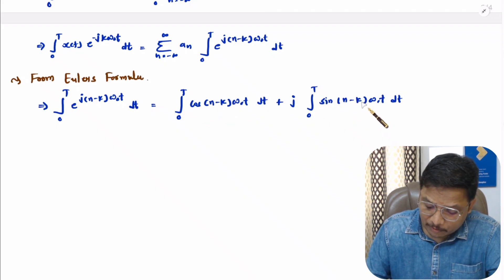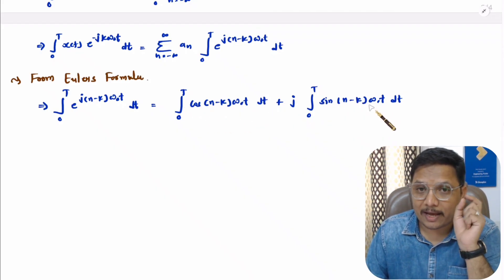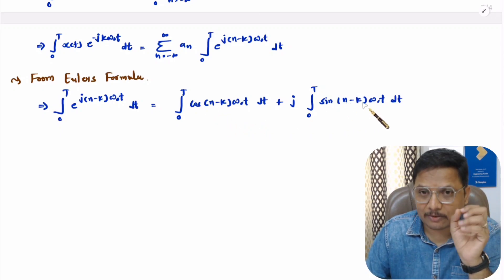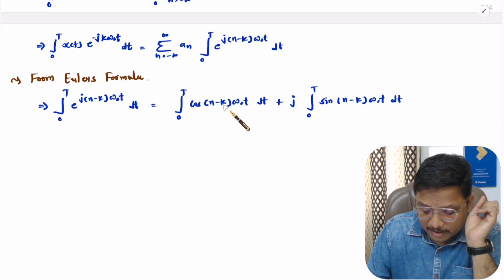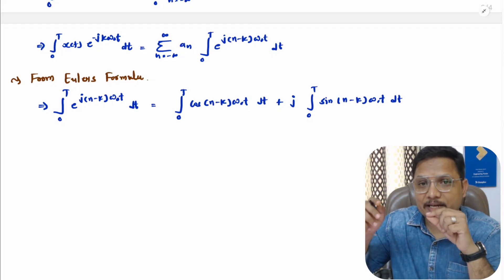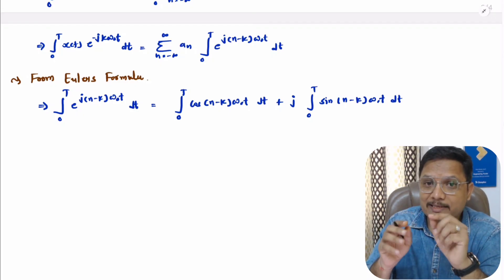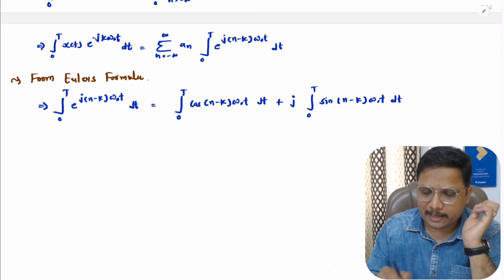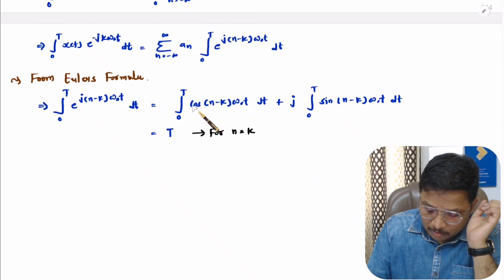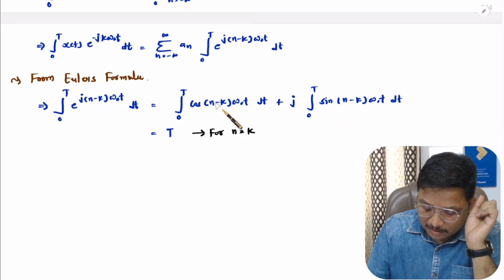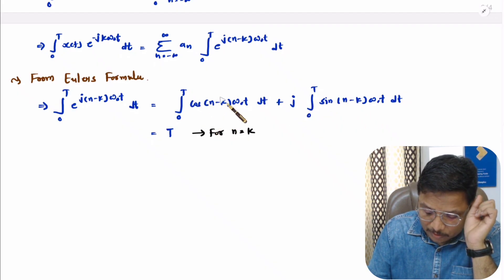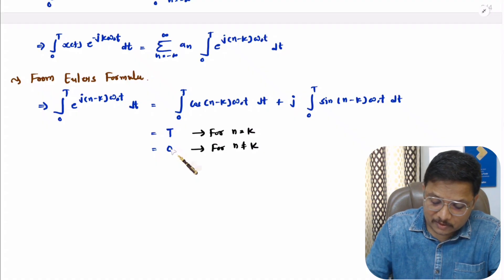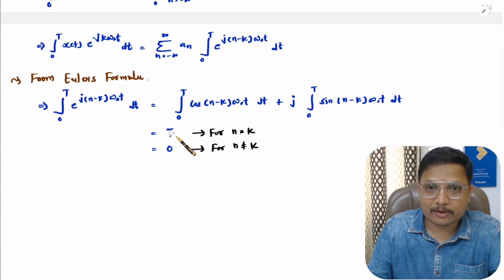Using this formula, we evaluate the integral in two cases. If n equals k, then cos(0) equals 1 and sin(0) equals 0, so the integral over 0 to T equals T. If n is not equals to k, then integration of a sinusoidal over duration 0 to T is always 0. So the total value of this integral is capital T only.